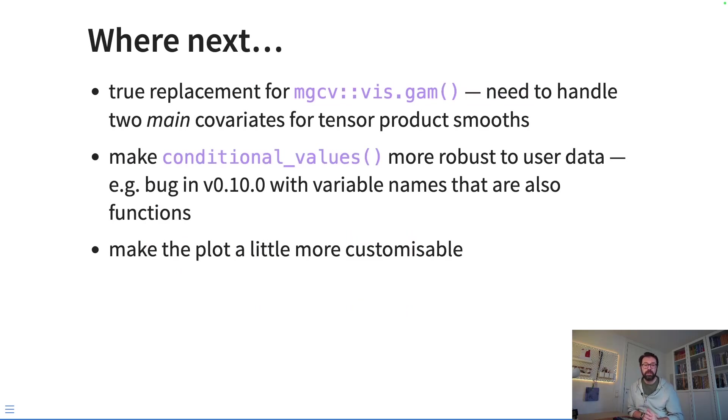So where we're going to go next with this function? Well, right now it's in a very basic form. It was just introduced in the latest version of gratia, but I plan to improve upon that over time. I want to make it a true replacement for mgcv's vis.gam function. I think that's one of the main functions in mgcv—at least visual functions in mgcv—that gratia doesn't already provide a ggplot or tidy replacement for. And to make it a true replacement for vis.gam, we're going to need to handle two main covariates.